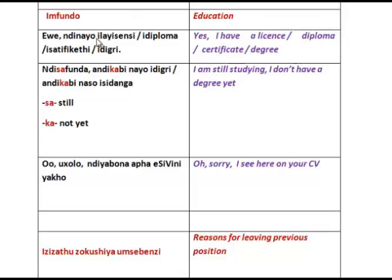Regarding education: 'di naiyo i laisense, di naiyo' — that is from 'yona' — these are the various qualifications the person has. Alternatively, 'di sa funda' — I am still in the process of studying — and for that reason 'andikabinaiyo i digri' — I do not yet have one of them, namely a degree. The 'yo' is from 'yona' — a degree — and 'so' is from 'sona,' referring to 'isitanga so.' 'Andikabinaiyo' — not yet. 'Ka' means not yet, as in 'andi ka sebenzi' — I have not yet worked. 'Sa' means still in the process; 'ka' means not yet.